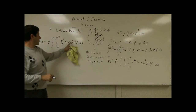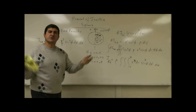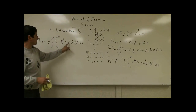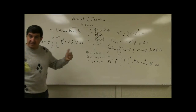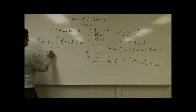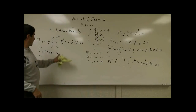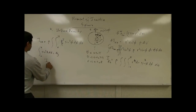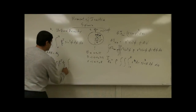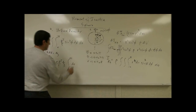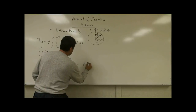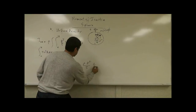Evaluating: the r integral gives r⁵/5 from 0 to R. The integral of sin³φ dφ from 0 to π equals 4/3 — there is no π in the answer. The θ integral from 0 to 2π gives 2π. So I_zz = ρ × (R⁵/5) × (4/3) × 2π.